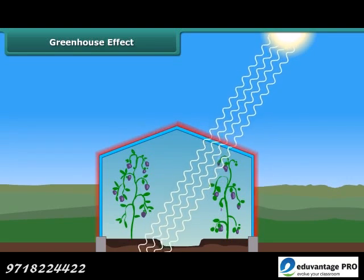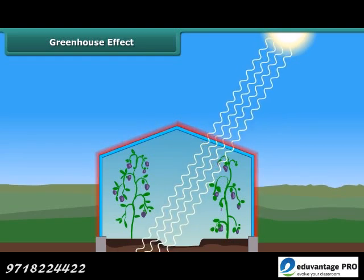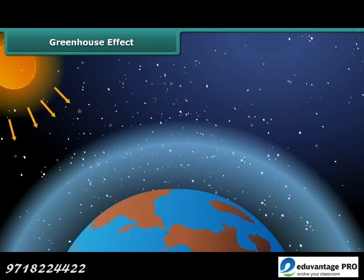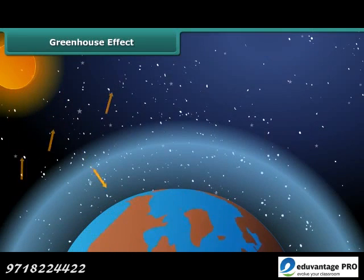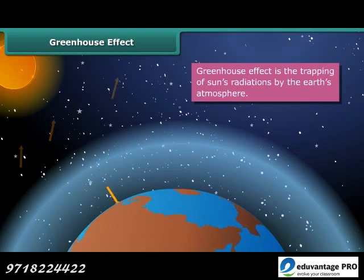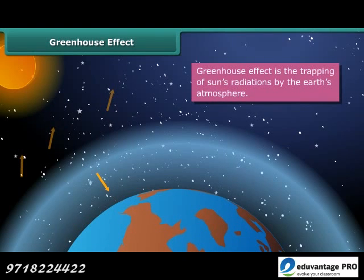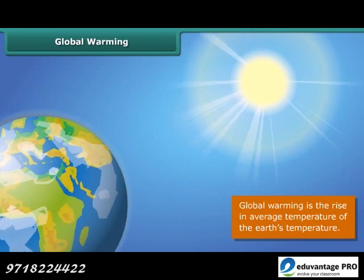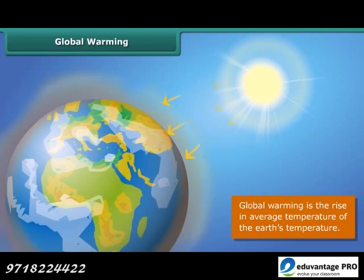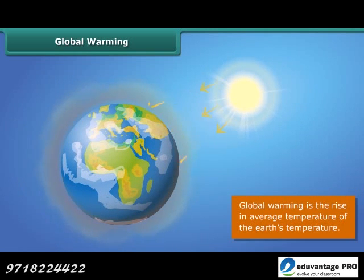Similarly, the greenhouse gases like carbon dioxide, methane, and nitrous oxide in the atmosphere act like glass panes. When the sun's radiation reaches our atmosphere, some rays are reflected back into space, and some are trapped by greenhouse gases, causing the atmosphere of the earth to warm up. Scientists believe that earth's temperature is going to increase even more in coming years, as greenhouse gases like carbon dioxide trap the heat from the sun.